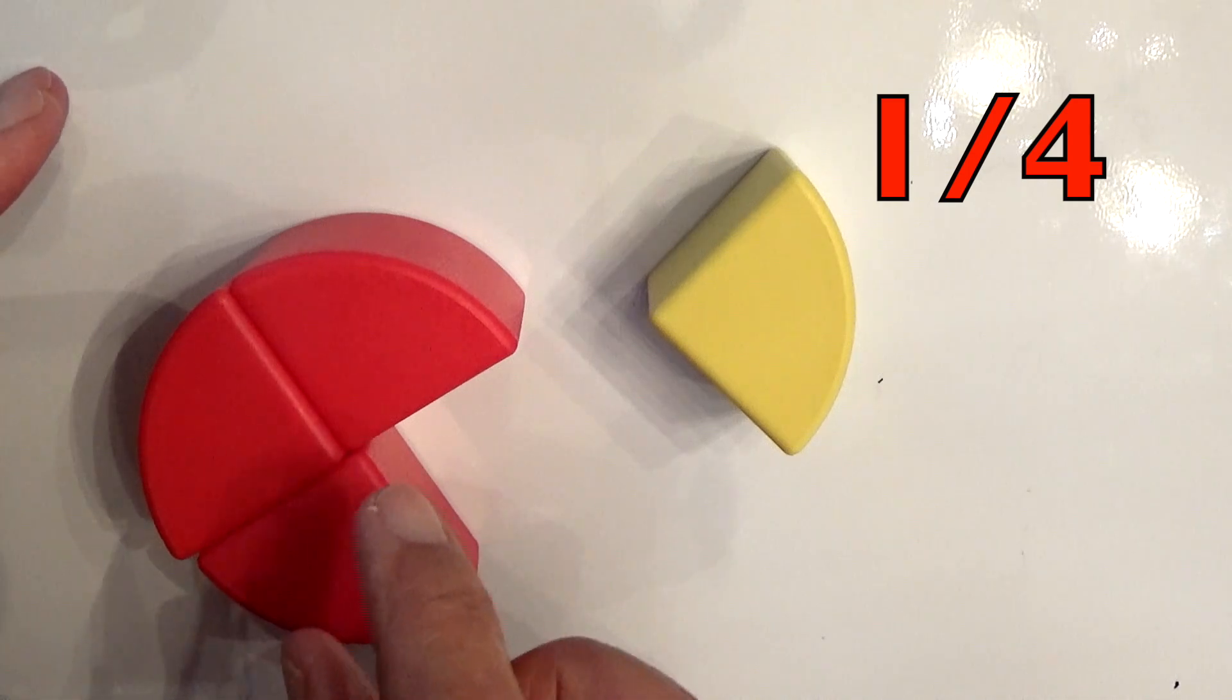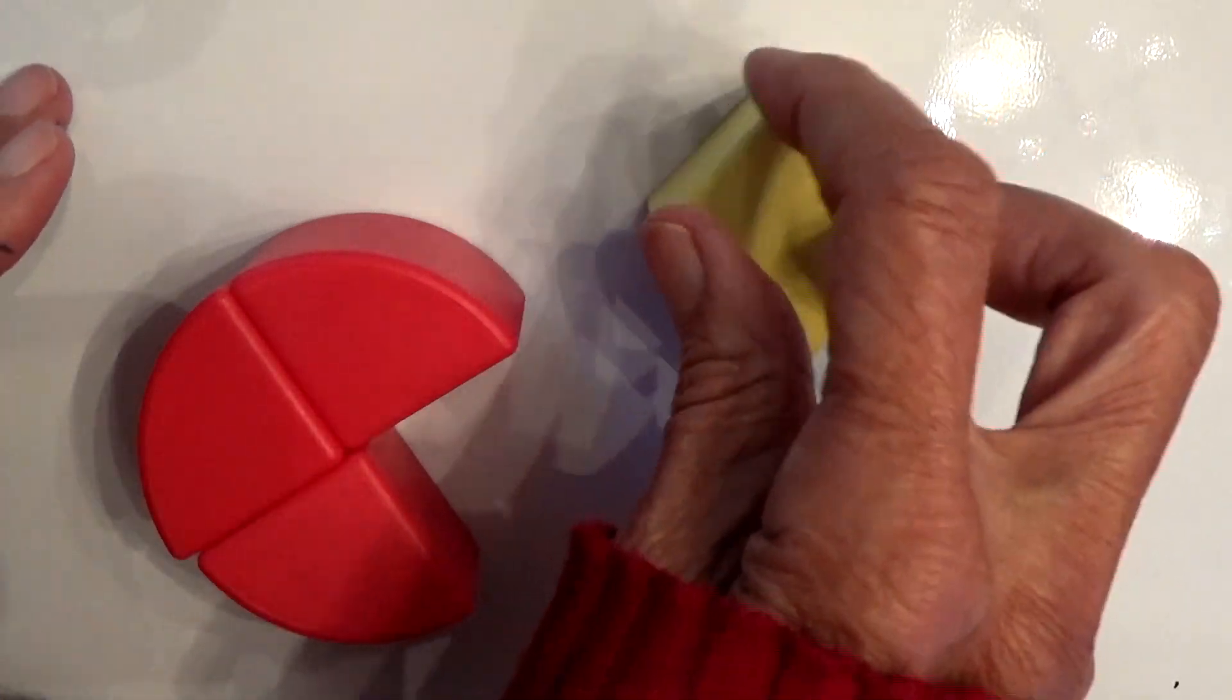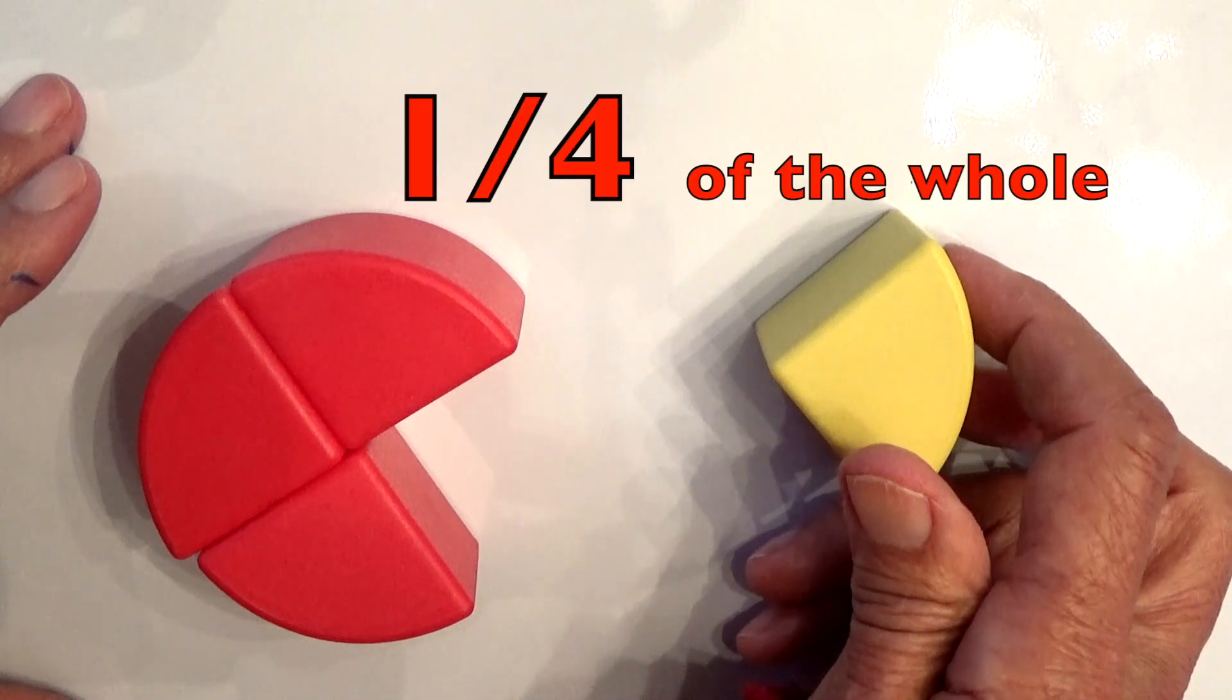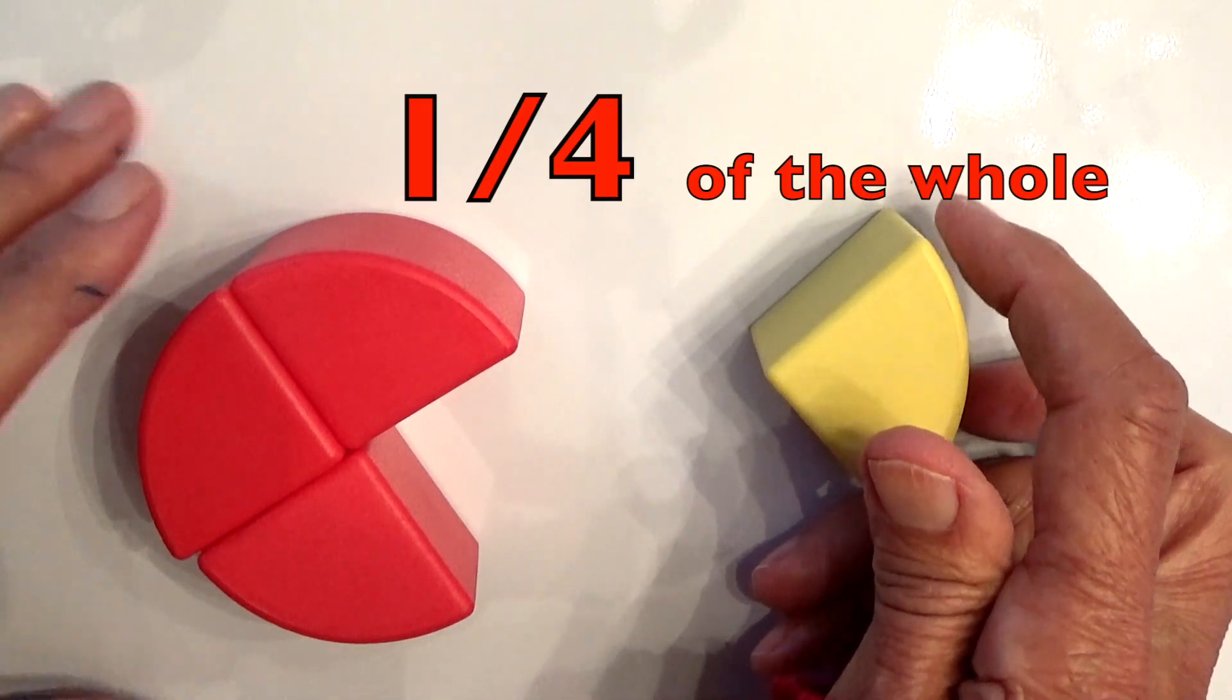Remember, there's four of them in this circle, and one, like this yellow one pulled apart, means one fourth of the whole.